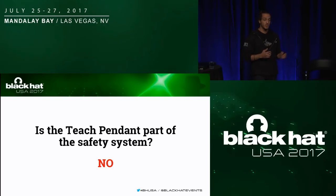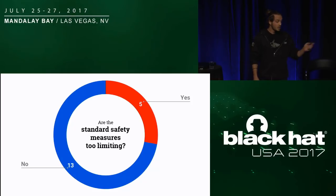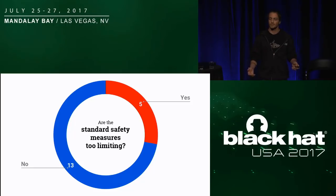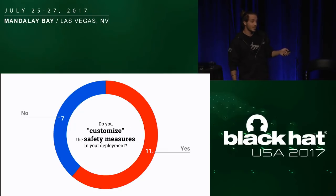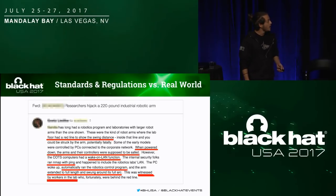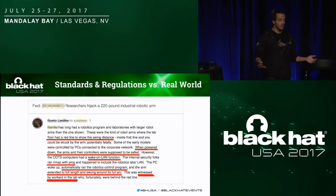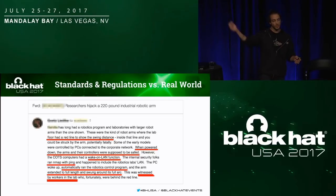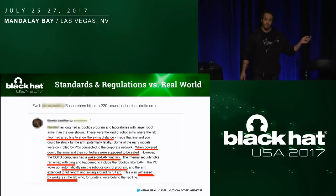What if these safety measures are too limiting? We asked our users. Some replied that yes, these measures are kind of limiting, and they will customize them. A follow-up report described an incident where a researcher was running a normal Nmap ping scan, and one of the packets happened to wake up the PC controlling the robot. The robot started swinging at full speed, and the only physical safeguard was a red line drawn on the floor. Fortunately, no one was hurt.